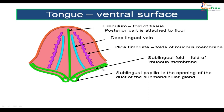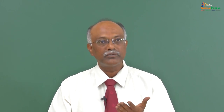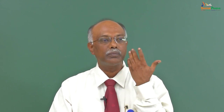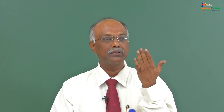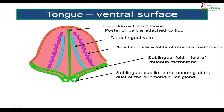Looking posteriorly, there is the sublingual fold — a fold of mucous membrane covering the submandibular duct, also called Wharton's duct. The sublingual papillae are two small openings on either side of the midline on the posterior part of the ventral surface, and the sublingual papilla is the opening of the submandibular gland duct. The sublingual glands open on the floor of the mouth by multiple small openings. The parotid gland duct opens into the vestibule of the mouth opposite the upper second molar.